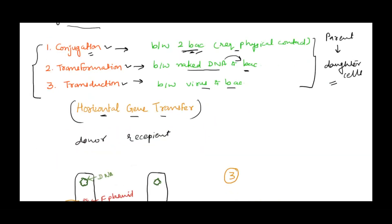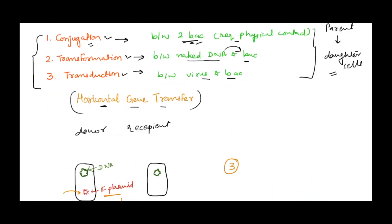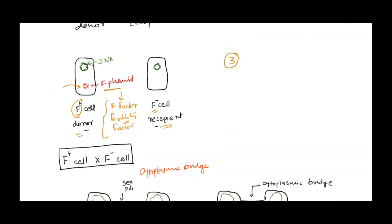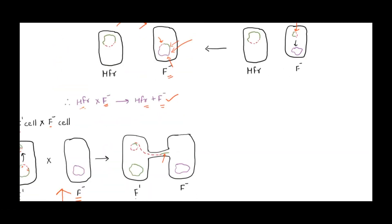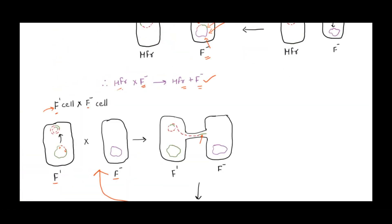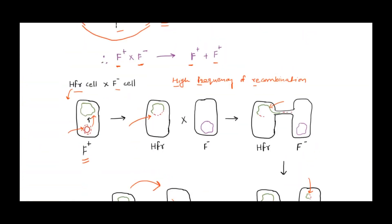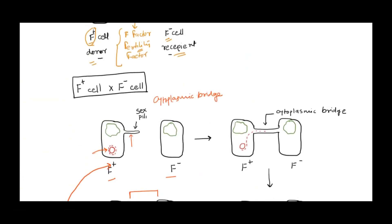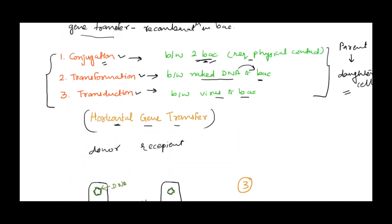To summarize, the three cases in conjugation are: F+ × F− cell, HFR × F− cell, and F prime × F− cell. That's all for now. Do subscribe to the channel for a new video every week, and keep learning.